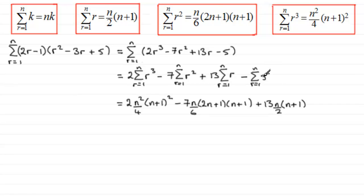And for the final term, minus the sum of the constant 5. We can see that 5 has been summed n times over, so it's going to be n times 5, or minus 5n.